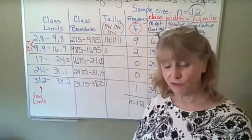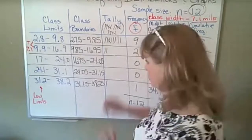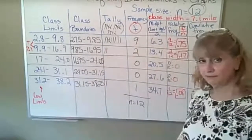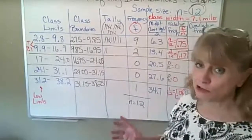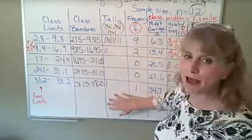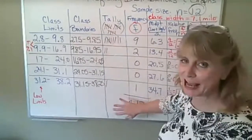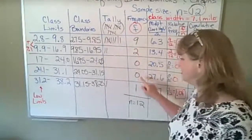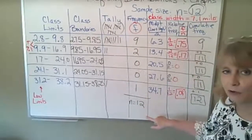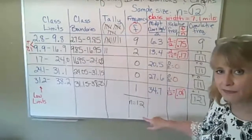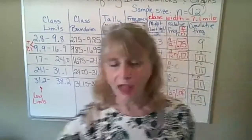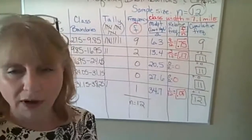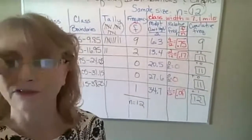Now we're going to look at some of the different graphs we can make using all of this information. One thing we don't use on the graphs is the tally column — MyStatLab rarely asks you to do the tally column because the only thing it's used for is to come up with the frequency counts. I'm going to share a PowerPoint so I can show you the different types of graphs.